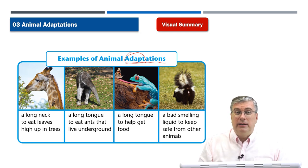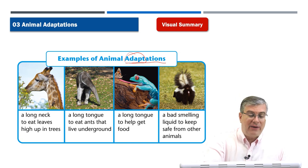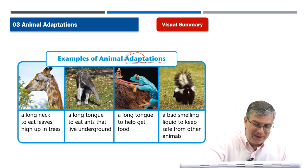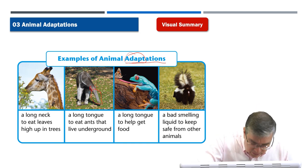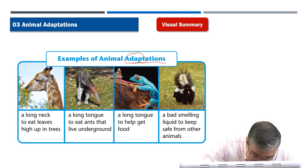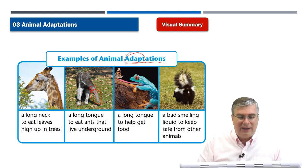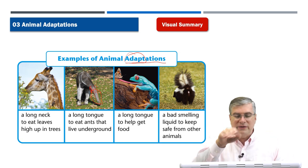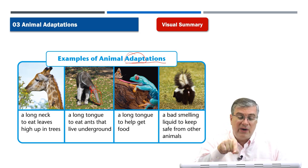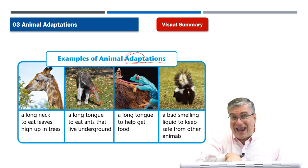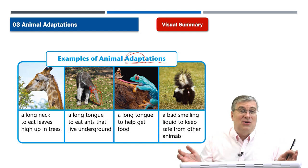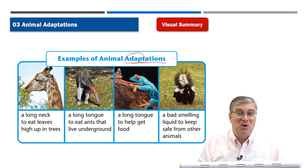We talked about an anteater in our vocabulary section. Look at that mouth on the anteater — those are his ears up there, and his eyes right there. Look at that mouth — that's a really long nose. His tongue is also very long because he can stick that tongue into the ant hole and get the ants that are underground. Poor ants — they're just going about their business in their home when along comes this big, long, sticky tongue and sucks them all up.